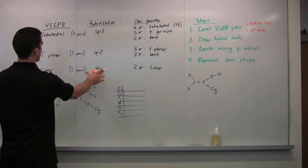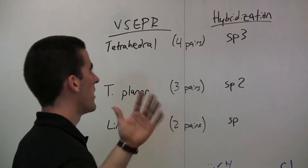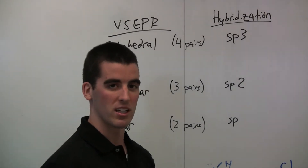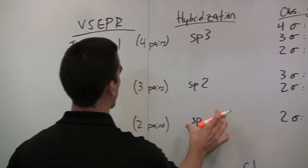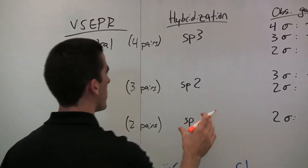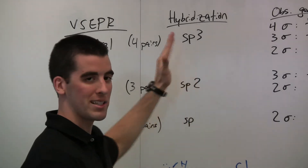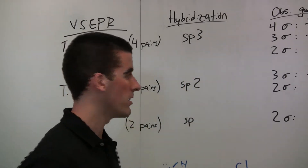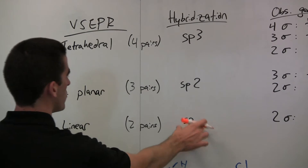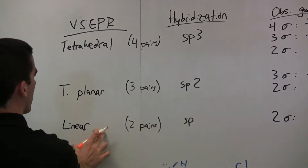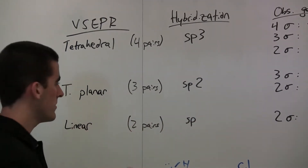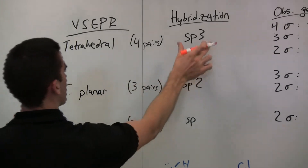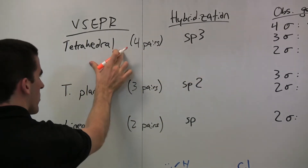There are three hybridization characterizations you're going to be using in organic chemistry. You can of course go higher, but SP, SP2, and SP3 are the primary hybridization schemes. SP correlates with linear VSEPR geometry, SP2 with trigonal planar, and SP3 with tetrahedral.